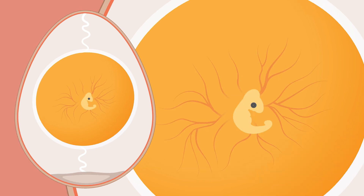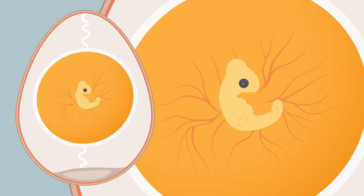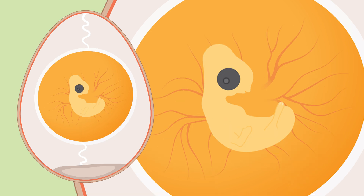Day 4: eye well pigmented. Day 5: presence of elbows and knees. Day 6: appearance of beak, voluntary movements begin.